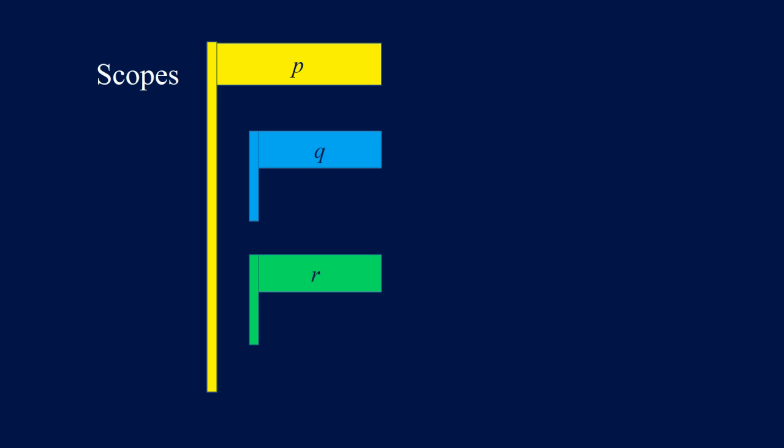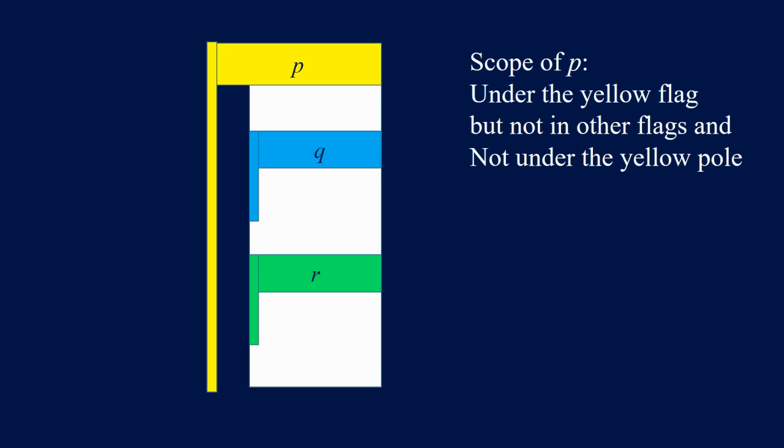The proposition or expression in the flag is the premise. Suppose that we have three flags arranged like this. The blue flag and the green flag are under the yellow flag, and the premises are in the corresponding flags. So P is the premise of the yellow flag, Q is the premise of the blue flag, and R is the premise of the green flag. The scope of P — that is where you can use P — is under the yellow flag but not in the other flags, and also not under the yellow pole.